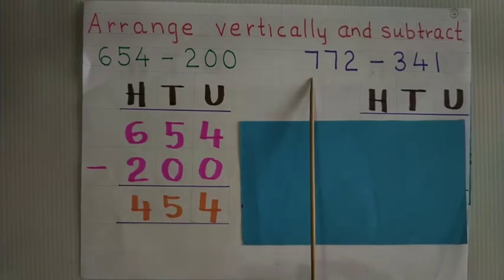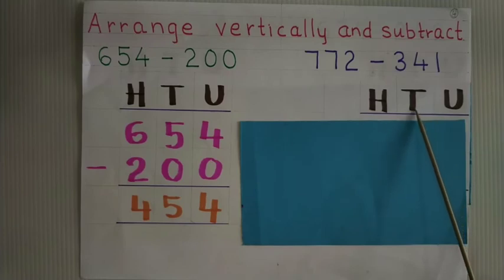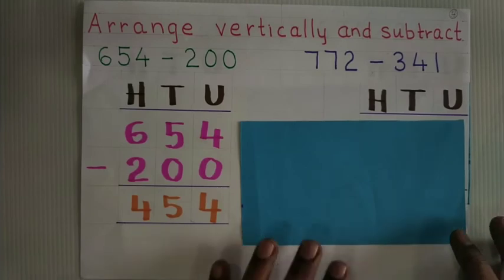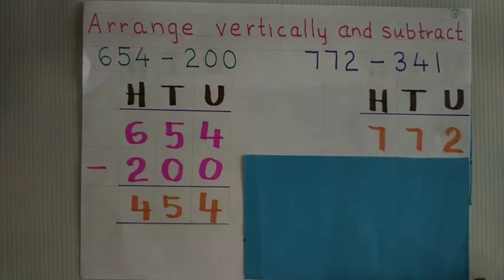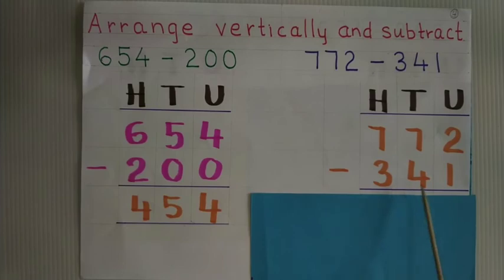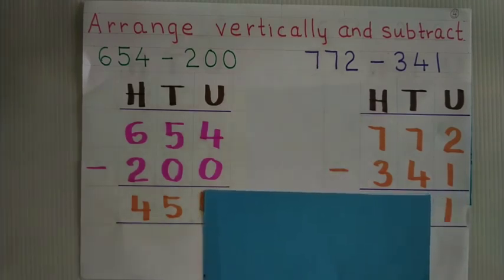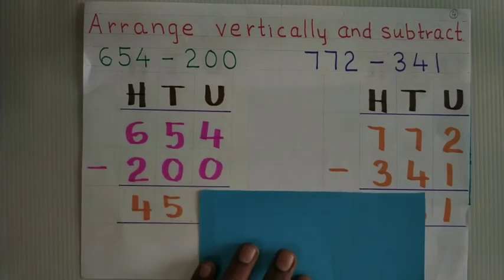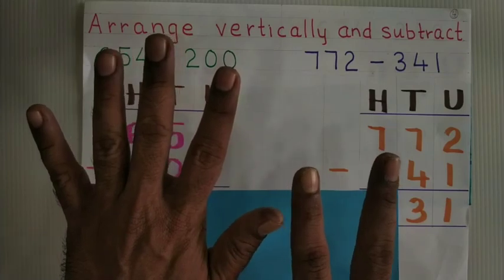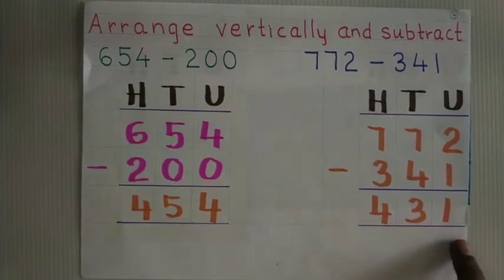Next sum: 772 minus 341. Arrange vertically — write 772, then minus 341. Now start: 2 minus 1 is 1. 7 minus 4 is 3. 7 minus 3 is 4. So 431 is the answer.